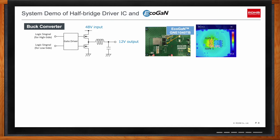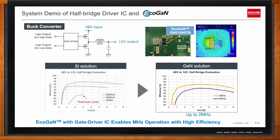What would this half bridge driver look like in a system design? We looked at a 48-to-12-volt DC-to-DC buck converter. In the graph, the silicon solution is limited to switching frequencies below 1 megahertz and quickly reaches thermal limits at 1 megahertz. The GaN solution allows switching frequencies up to 2 megahertz at high frequencies.